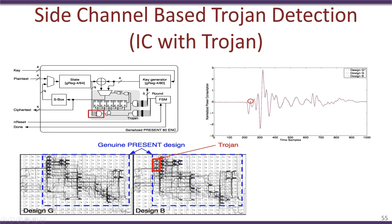Looking at the chip-level details, this is how the golden reference looks. The chip-level details of the device with the trojan show a small addition — there are a few extra logic elements used to hold the trojan. When we compare the power profile of this trojan circuit with the golden circuits, we see that there is a slight difference. The red profile corresponding to the design with the trojan looks considerably different compared to the golden ones. Thus, we can conclude that this design may have a trojan present in it.